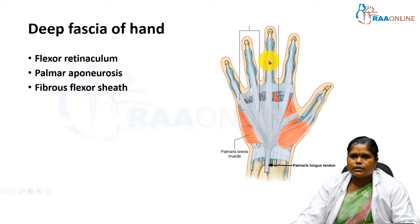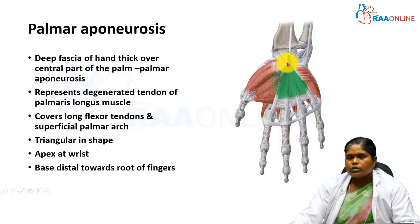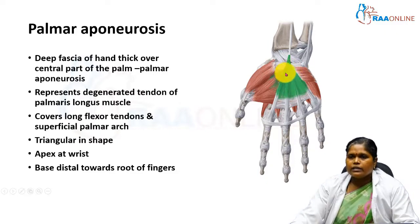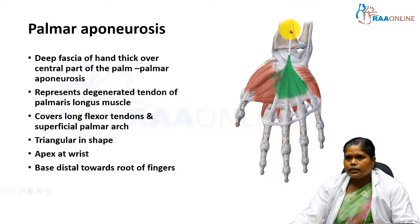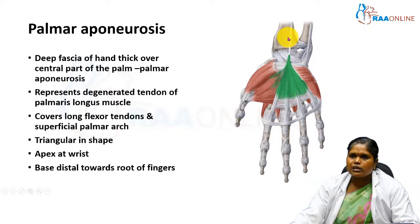Coming to the palmar aponeurosis proper — this is a deep fascia of the hand at the center of the palm, thickened to form the palmar aponeurosis. It is considered a degenerated part of a tendon. A tendon comes from the forearm to the hand — the tendon of palmaris longus muscle — so the palmar aponeurosis is considered a degenerated portion of the palmaris longus muscle.